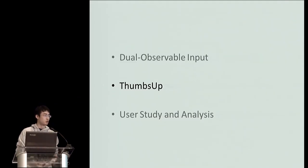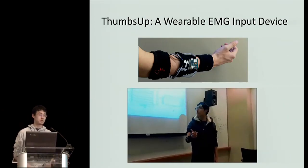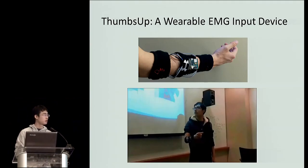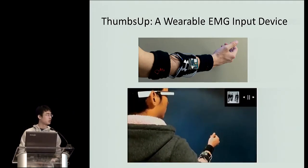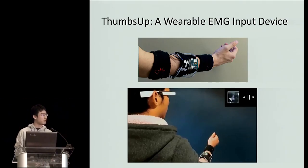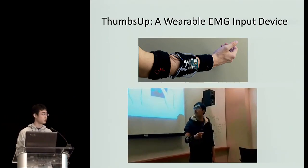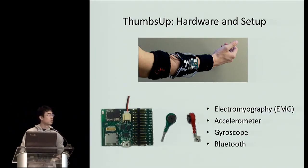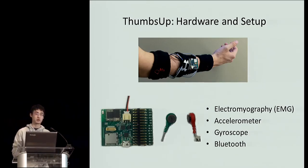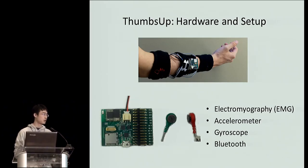To demonstrate the potential of dual-observable input, we built the wearable device that we're calling ThumbsUp. ThumbsUp is a wearable EMG device worn on the forearm that can detect and classify various thumb gestures — specifically left and right swipe, tap, and long press, and potentially more complex gestures. Notice that left swipe, right swipe, tap, and long press are gestures performed very frequently on your smartphone. ThumbsUp uses seven EMG input channels spread across the forearm along with an accelerometer and gyroscope, a custom EMG board with dry EMG electrodes, and uses Bluetooth to communicate with other devices.